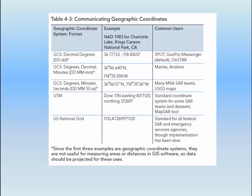First in the table is decimal degrees. You'll often see it abbreviated, especially in a GPS unit, as DD — uppercase DD dot lowercase DD — to indicate the format of, in this example, 36.77733 degrees. When you give it verbally to another person, you'd say: datum is WGS 84, and coordinates in decimal degrees of 36.77733 by negative 118.42657. Decimal degrees are commonly used by satellite-based location devices such as SPOT, GeoProMessenger, PLBs, and OnStar. But if you receive an emergency call from them, never assume — always ask what coordinate system and datum they're using.